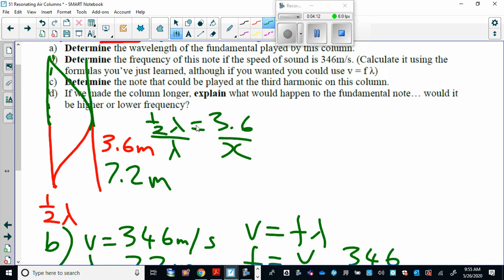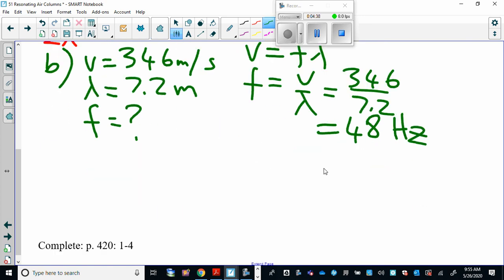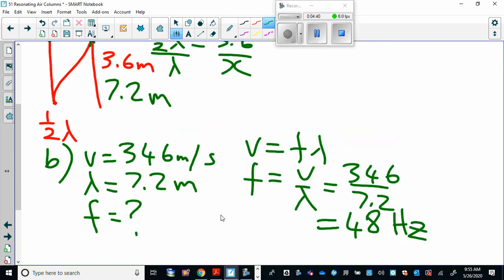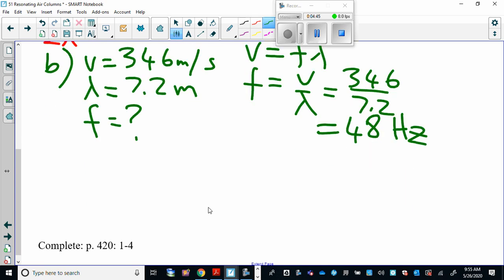So that one again is pretty straightforward. It gets a little more involved when we get to C. Just back to B, it says calculate it using the forms you just learned. Although if you wanted, you could use those other formulas. So I just used V equals F lambda. I don't like using those other formulas just because you're not going to use them again in physics 30, and it's just more to memorize when I think this teaches you the basics more. So if you want to use those other formulas that I mentioned previously in the lesson, then go for it. I'm going to not.